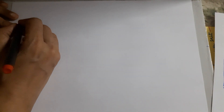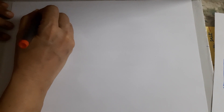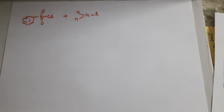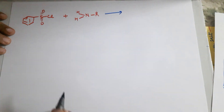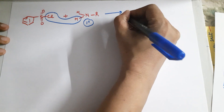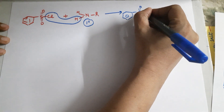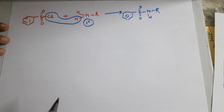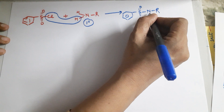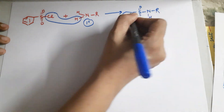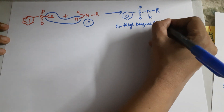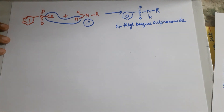Let us take benzene sulfonyl chloride and react it with a primary amine, R-NH2. H and Cl are lost as explained. What you end up with is benzene-SO2-NH-R. This is called a sulfonamide — amide has NH with CO, this has NH with SO. So it is called sulfonamide, or you can call it N-alkyl benzene sulfonamide.